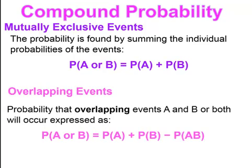When we have overlapping events, the events are not mutually exclusive. Mutually exclusive has no overlap in the probability. But when we have overlapping events, the probability that overlapping events A or B will occur is expressed as: the probability of A plus the probability of B, but then you would need to subtract out the probability of that overlap, so you're not including that value twice. You always have to subtract out the overlap.